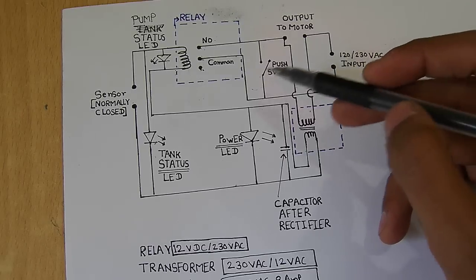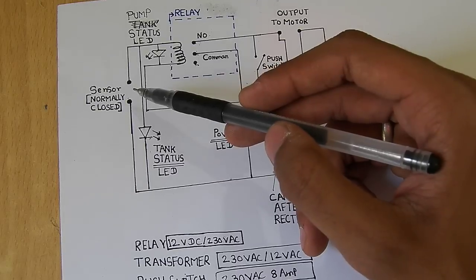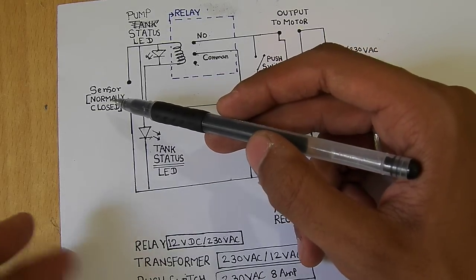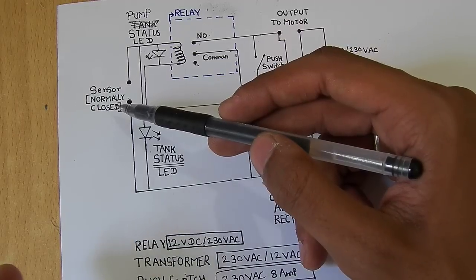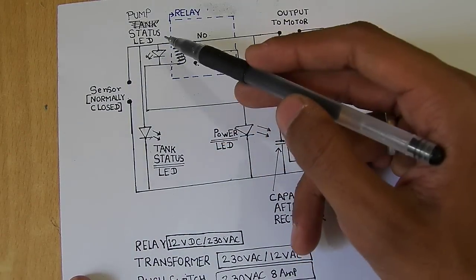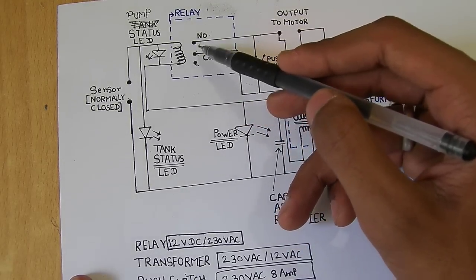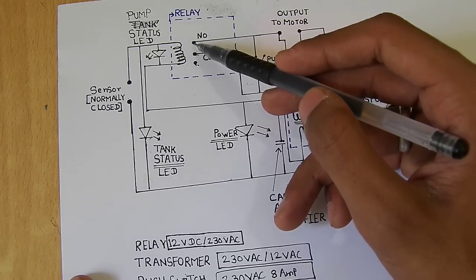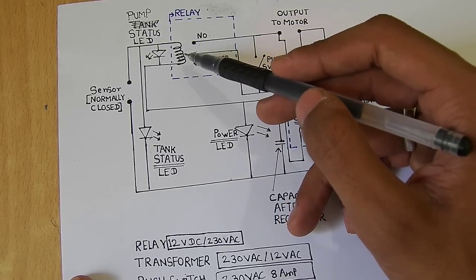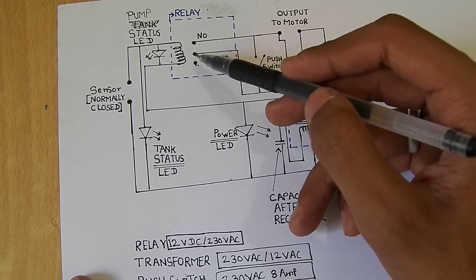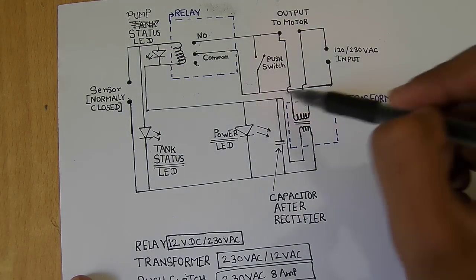Now when the tank is full, the normally closed switch turns into open. So what happens is that current will not go to this coil and the connection between NO and common terminals is now open, and these two are connected. So this total circuit will be off.